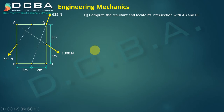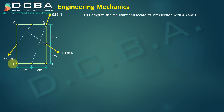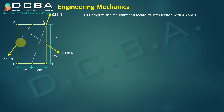Today in this video lecture we will be solving this numerical — it is a non-concurrent force system and we need to compute the resultant and locate it on AB and BC, finding exactly where it cuts. The forces are inclined, so the inclination angles have to be found out. We also need to select the point where we are going to transfer all our forces.